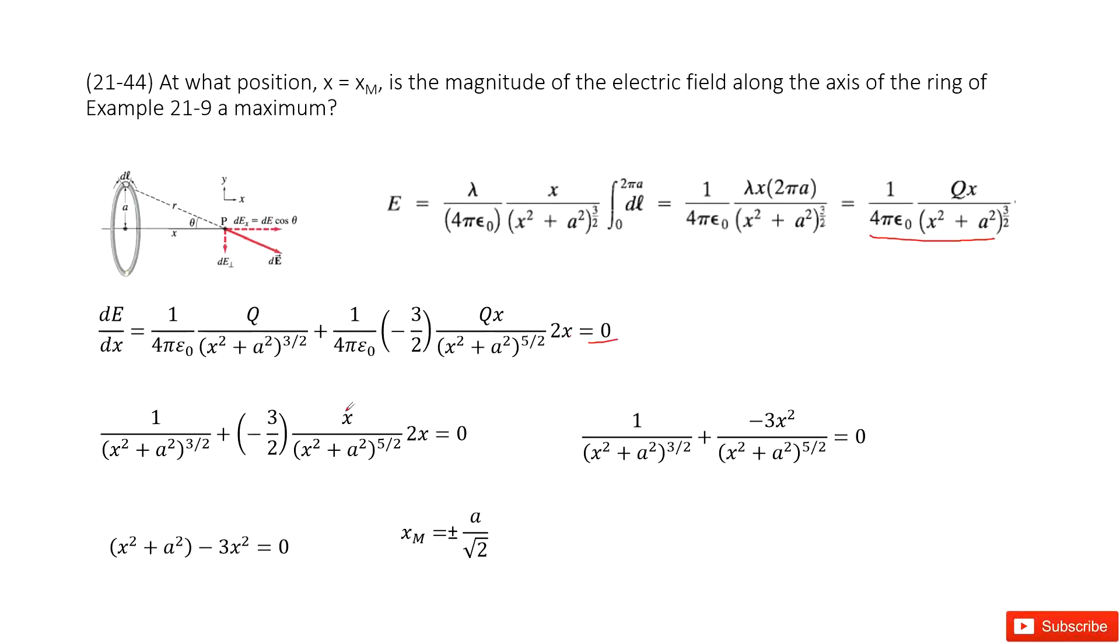And then we just simplify this equation. So 1 over 4πε₀ just cancels. 2, 2 cancel. So the answer becomes, it looks like this one, and then can be simplified as this one.